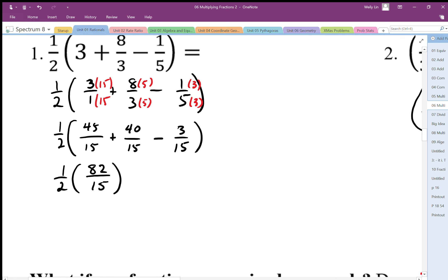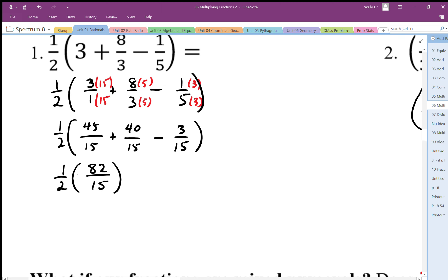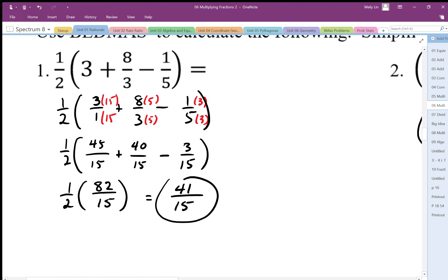And then multiplying this together, we can see that 2 and 82 share common factors. So this simplifies to 82 divided by 2 is 41 over 15, and that represents the solution to this calculation.